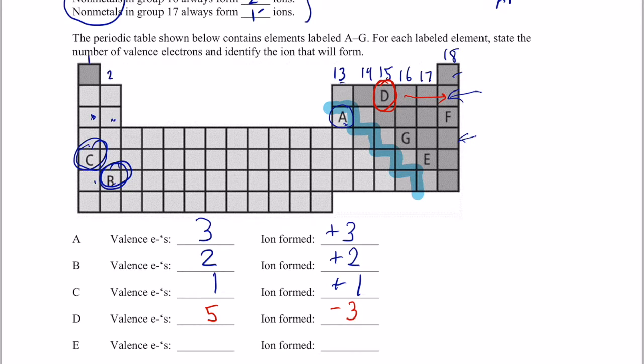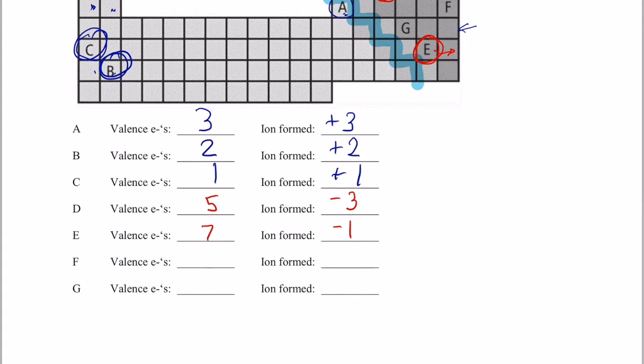Letter E. Right down here in group number 17, it's only one away from becoming a noble gas. So it has seven valence electrons. It gains one. So it would be negative one.